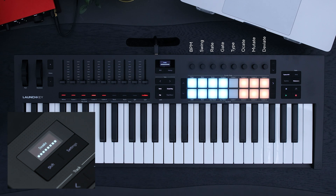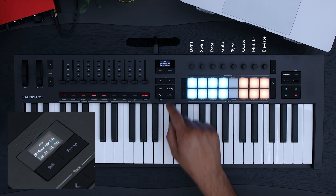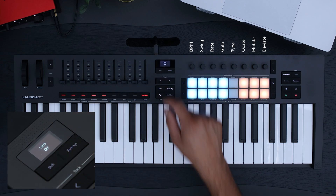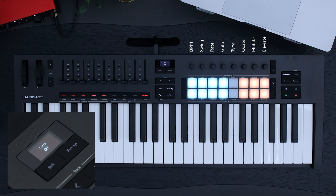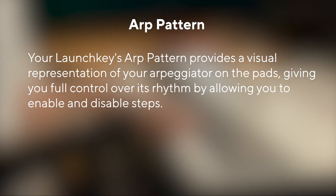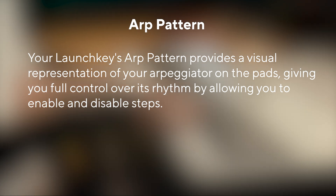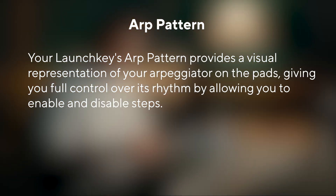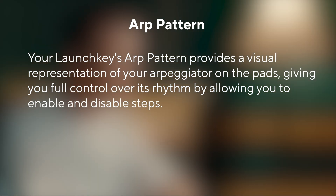To turn your latch notes off, hold Shift and then ARP. Your Launch Key's ARP pattern provides a visual representation of your arpeggiator on the pads, giving you full control over its rhythm by allowing you to enable and disable steps.